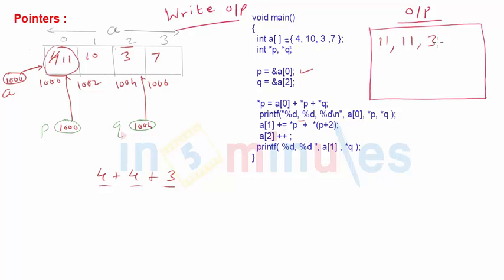Then a[1] += *p + *(p+2). p is 1000, so firstly what that line will be: it will be a[1] = a[1] + *p + *(p+2). Firstly a[1] is 10, *p value at 1000 is 11, and plus value at 1000 + 2. Now since it is an integer pointer, +2 stands for +4, so it will be value at 1004, that is nothing but 3.